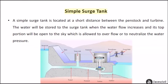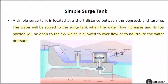Simple surge tank: A simple surge tank is located at a short distance between the penstock and turbine. The water will be stored to the surge tank when the water flow increases, and its top portion will be open to the sky, which allows it to overflow or to neutralize the water pressure.